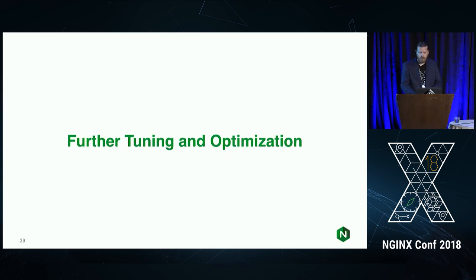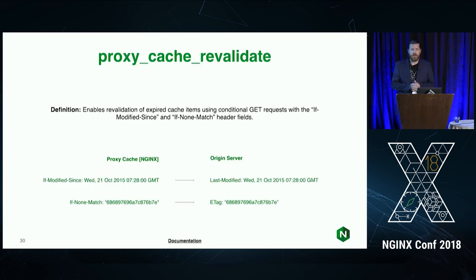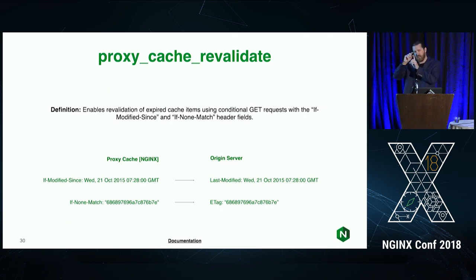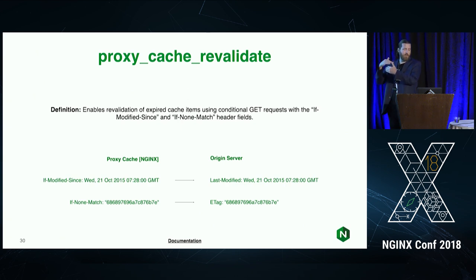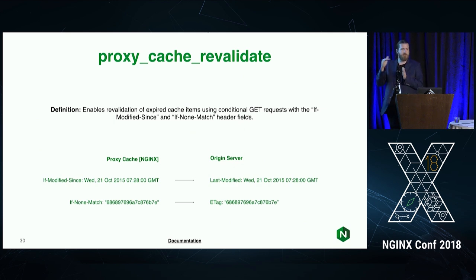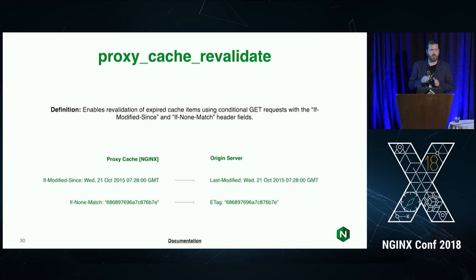ProxyCache Revalidate is a really nice feature. It enables NGINX to revalidate expired cache items by sending a conditional GET request to the backend. Instead of doing a full request expecting the full response body, it first sends a conditional GET with two headers — If-Modified-Since and If-None-Match. It passes what NGINX thinks was the last modification time, compares that to what the server responds with via Last-Modified, and also sends the ETag it has for that file. If those match, it doesn't need to get the whole response from the backend — it just serves it to the client. This saves a lot of bandwidth on the backend.